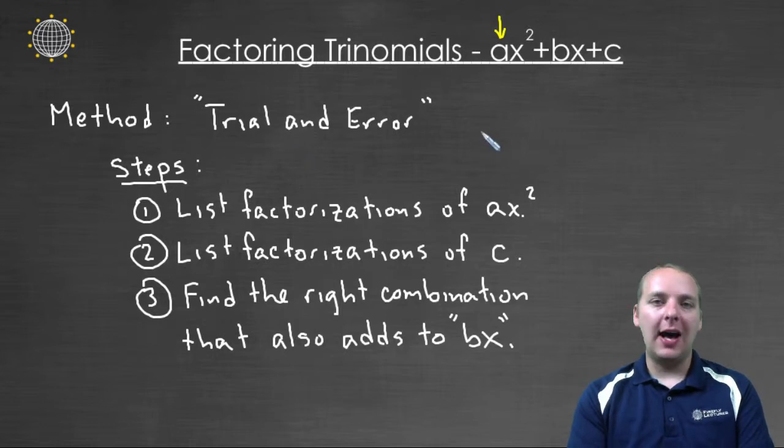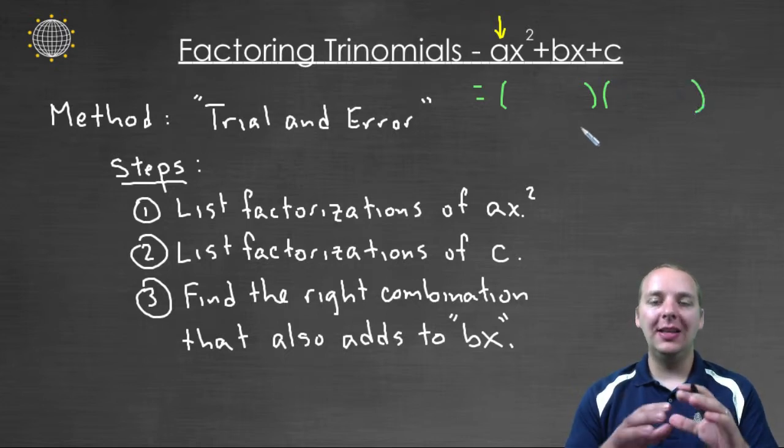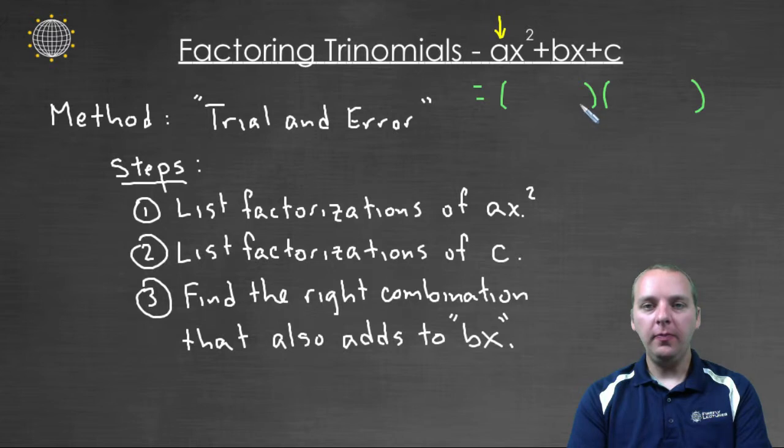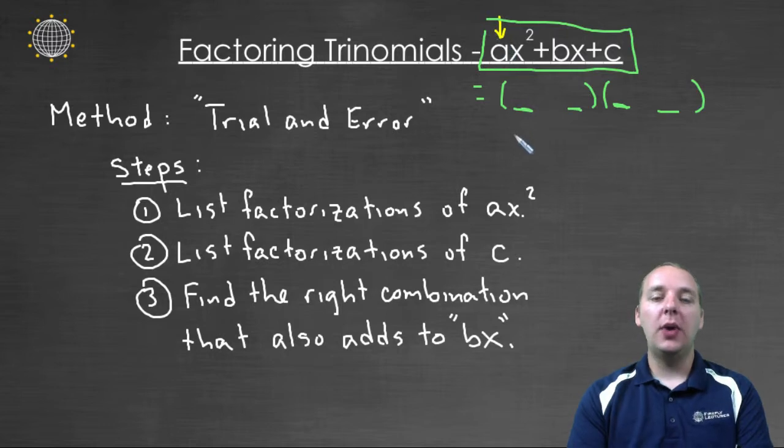Basically the idea behind the trial and error approach is simply the fact that if we have a quadratic here, we know that if this guy does in fact factor, we know the template of what the answer is going to look like. Because this is going to have to be two linear factors that would foil to give me this guy. And so the F, the O, the I, and the L, the first, the outer, the inner, and the last, would all have to reduce to give me this quadratic here.